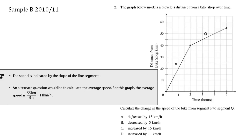The question is: what is the change in speed? Let's calculate the speed of this segment. The velocity for segment P is the slope of this graph. The slope is rise over run.